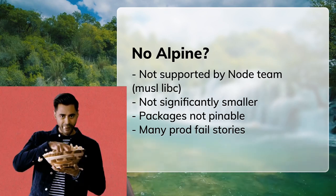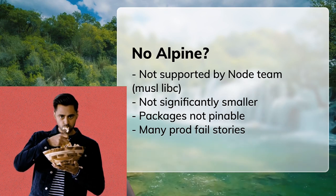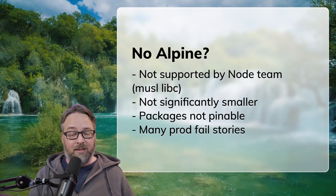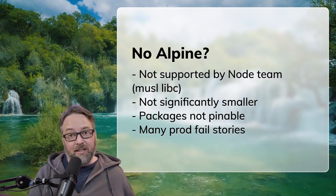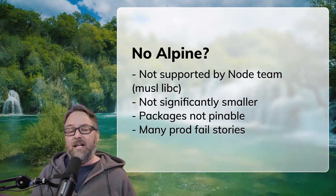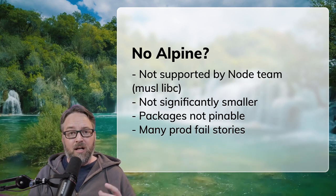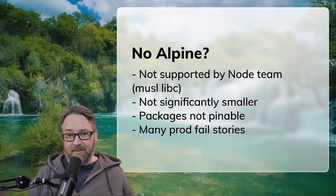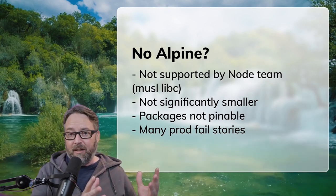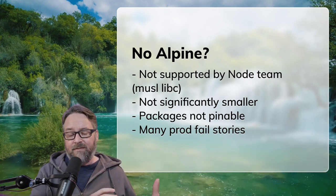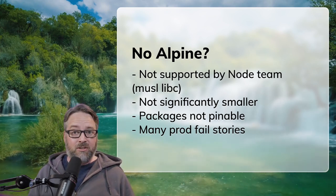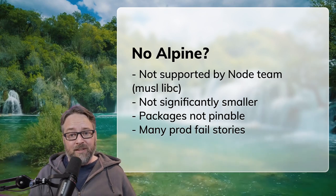A few of my major reasons: first, the node team only considers Alpine experimental, not giving it the true tier-one support that they give standard C libraries that come with things like Ubuntu, CentOS, and Debian. It turns out that when you compare slimmed-down node Debian instances of a container image, they're no bigger than the Alpine image. In fact, if you go with Distroless, which we'll talk about in a second, it's actually smaller than the Alpine image. So size isn't a reason to pick Alpine.